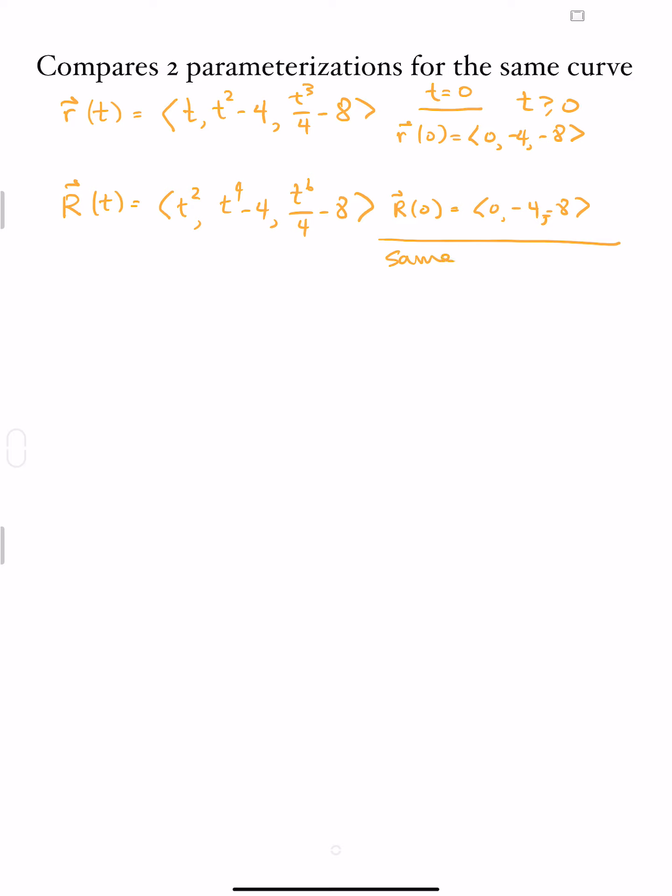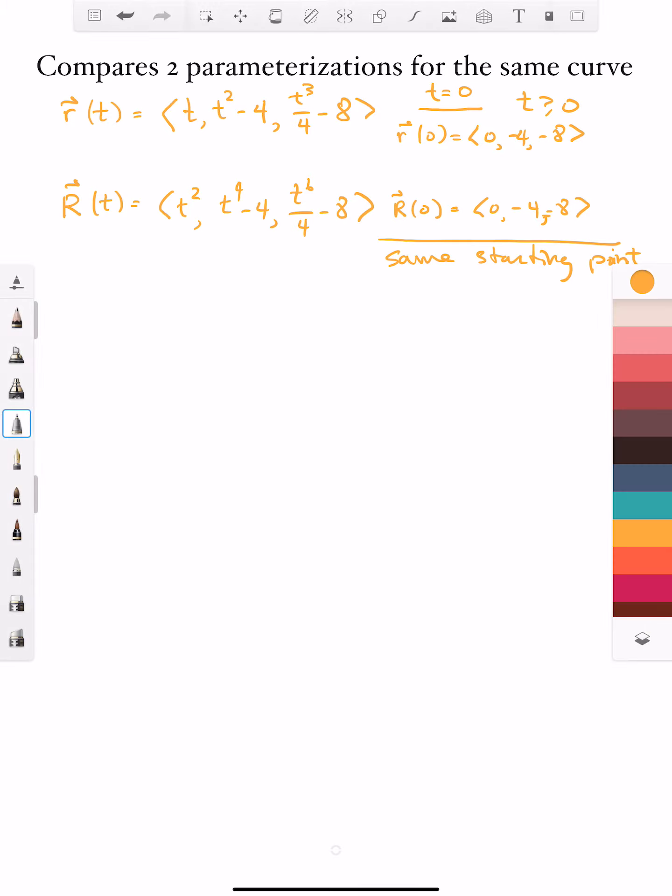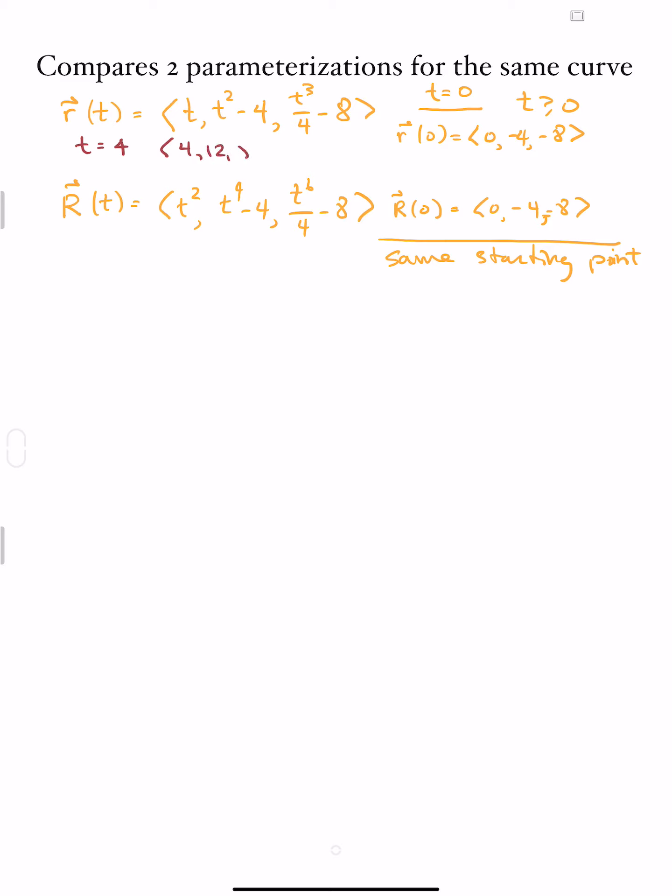We're going to look at what happens as they go through space and the parameter t increases. For example, for the small r vector, when t = 4, this vector is at (4, 12, 8).